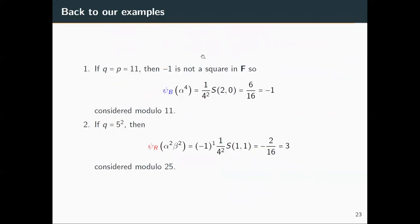Returning to our examples: for the field of size 11, since −1 is not a square, ψ_B(α⁴) = (1/4²) · s(2,0) = 6/16, which equals −1 modulo 11. For the field of size 25, the formula gives −2/16, but working modulo 25 this equals 3, consistent with the earlier direct computation of −2 (since 3 ≡ −2 in that field).